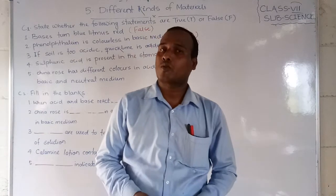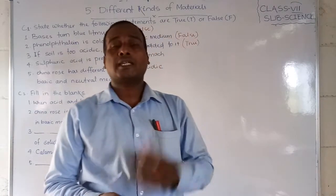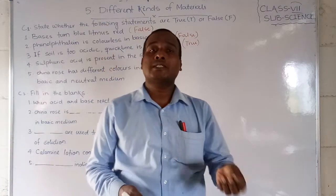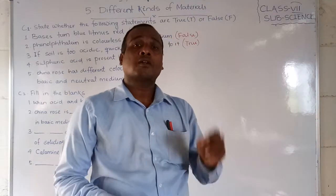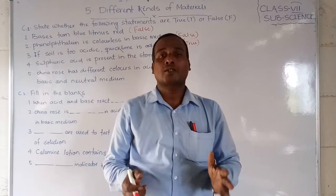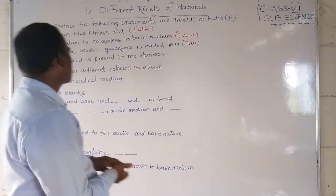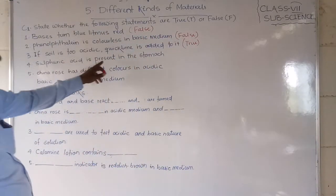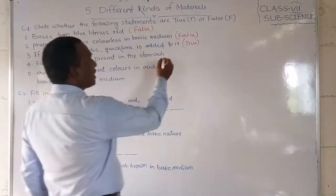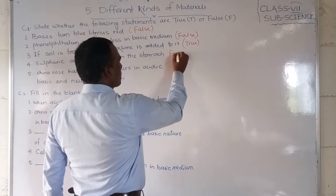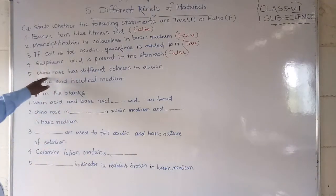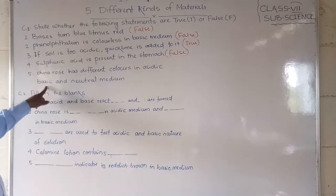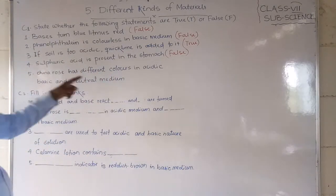Now, sulfuric acid is present in the stomach, which means for the digestion of food, hydrochloric acid is secreting from the stomach. So it has given that sulfuric acid is present in the stomach, which is a wrong statement. What is the correct answer? Hydrochloric acid is present in the stomach. So it is a wrong statement, sulfuric acid is not present in the stomach. What is present? Hydrochloric acid. So it is false.